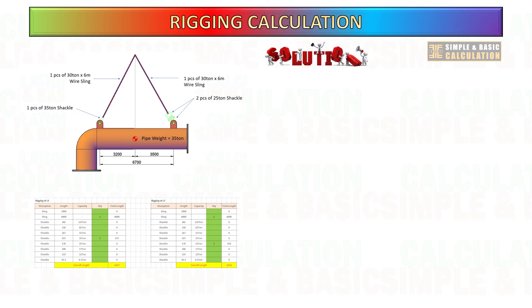Now, start to calculate the total weight of the rigging for lifting point number 1 and lifting point number 2.